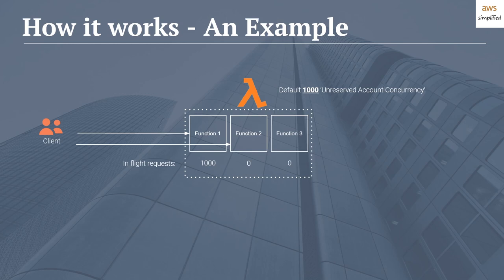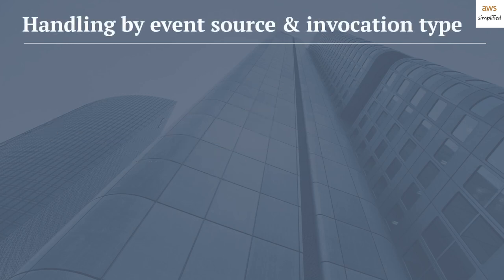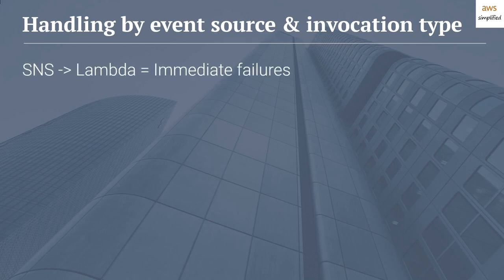Now let's talk about how throttling behavior differs depending on the event source and invocation type. For SNS to Lambda — one of the more common setups — this results in immediate failures. When SNS tries to invoke your Lambda function and the throttling limit is hit, it will receive a throttling exception. If you have a retry policy configured on your SNS topic, SNS will try to invoke your Lambda function for a period of time, but it can't guarantee eventual success — it actually stops trying after a number of hours.